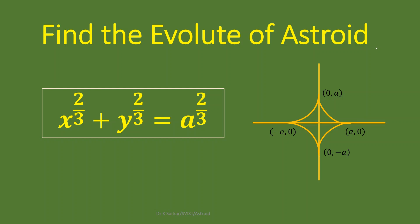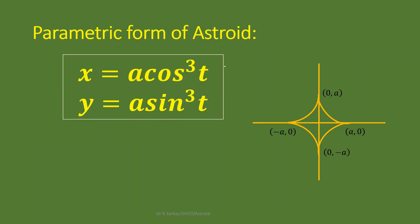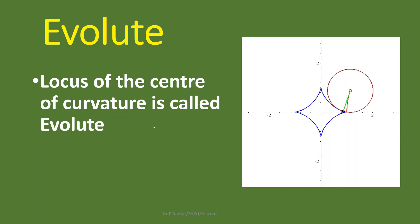In this lecture we are going to find the evolute of the astroid. The Cartesian equation of the astroid is x^(2/3) + y^(2/3) = a^(2/3). The astroid touches the x-axis at (a, 0) and (-a, 0), and touches the y-axis at (0, a) and (0, -a). The parametric equations are x = a·cos³t, y = a·sin³t, where t is the parameter.